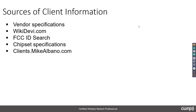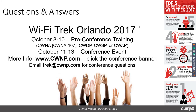So we've now covered the five sources: vendor specifications, WikiDevi, chipset specifications, FCC ID search, and clients.mikealbano.com. Those are the good sources of information about various client devices, and that's the content scheduled for today. We'll now begin the Q&A period for those who have time to stay.